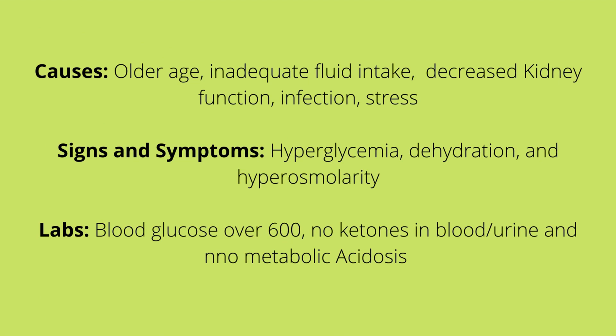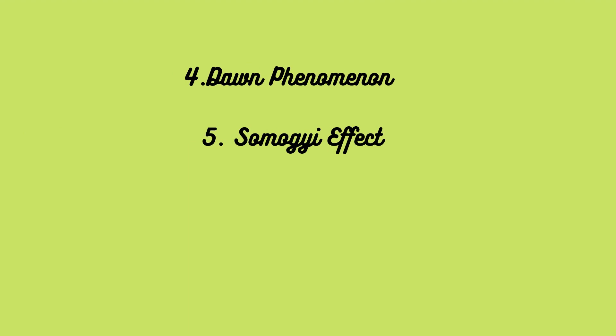With HHS, there is enough insulin to prevent ketosis but not enough to control hyperglycemia. Causes include older age, inadequate fluid intake, decreased kidney function, infections, and stress. Signs and symptoms of hyperglycemia include polydipsia, polyphagia, and polyuria. Dehydration signs include hypertension, tachycardia, seizure, weak pulse, headache, and weakness, as well as hyperosmolarity. Labs show blood glucose over 600, with no ketones in blood or urine, and no metabolic acidosis.